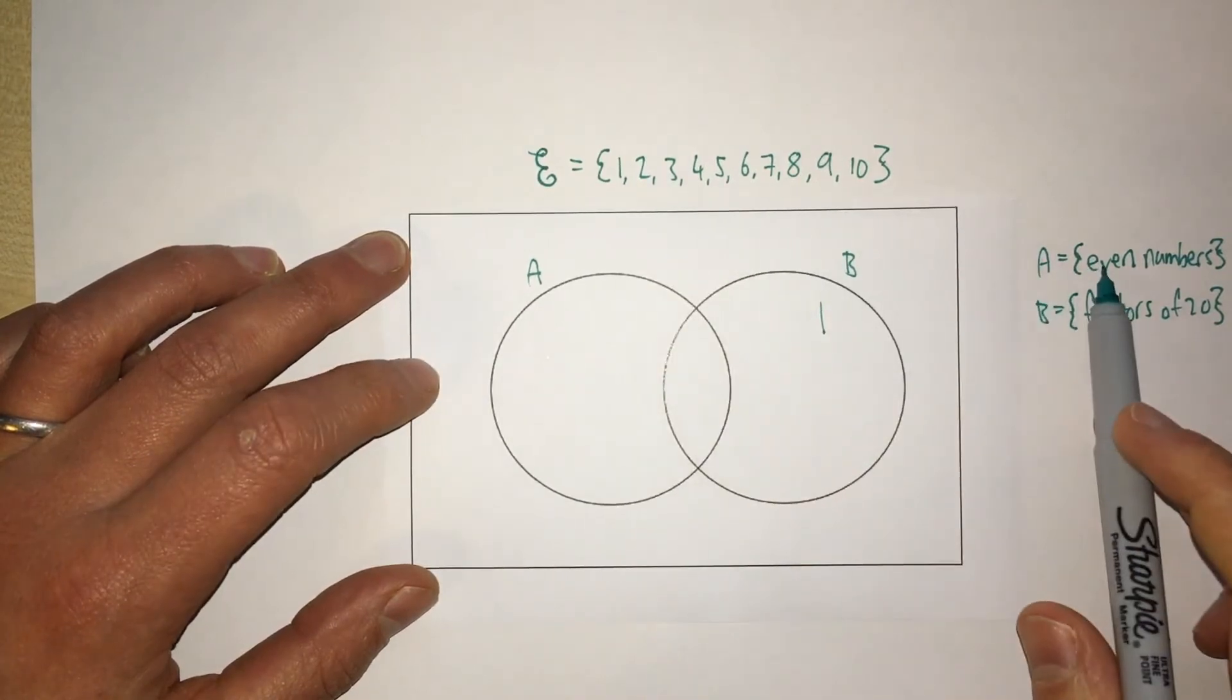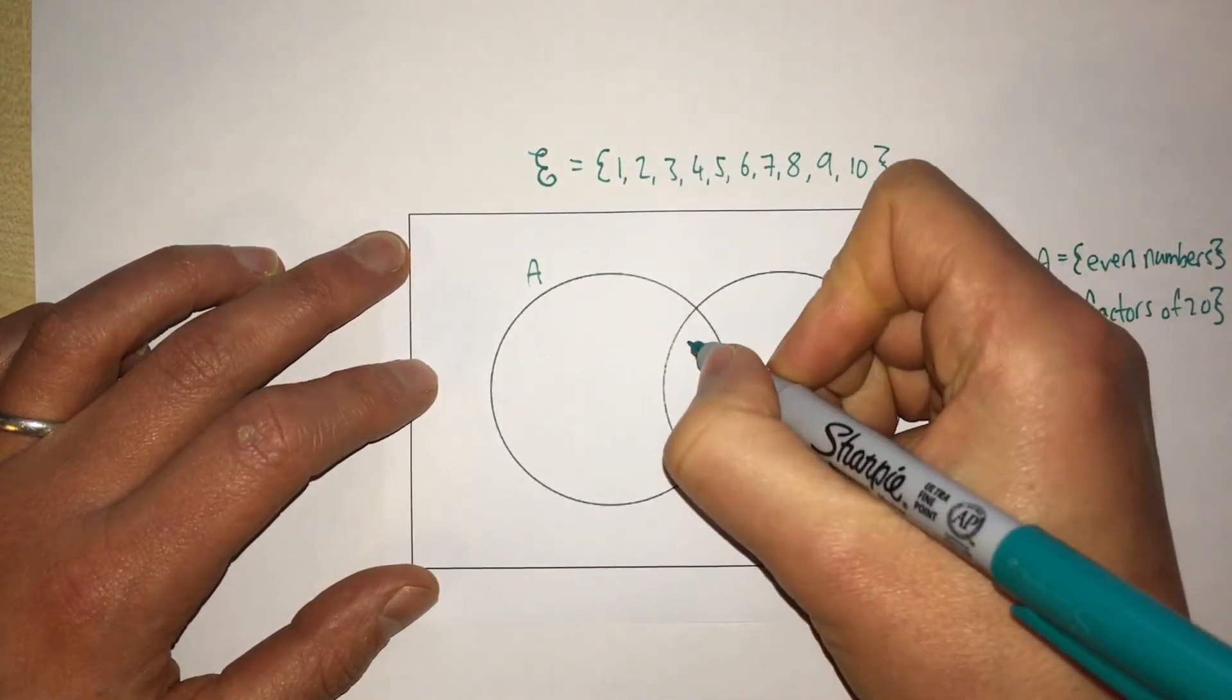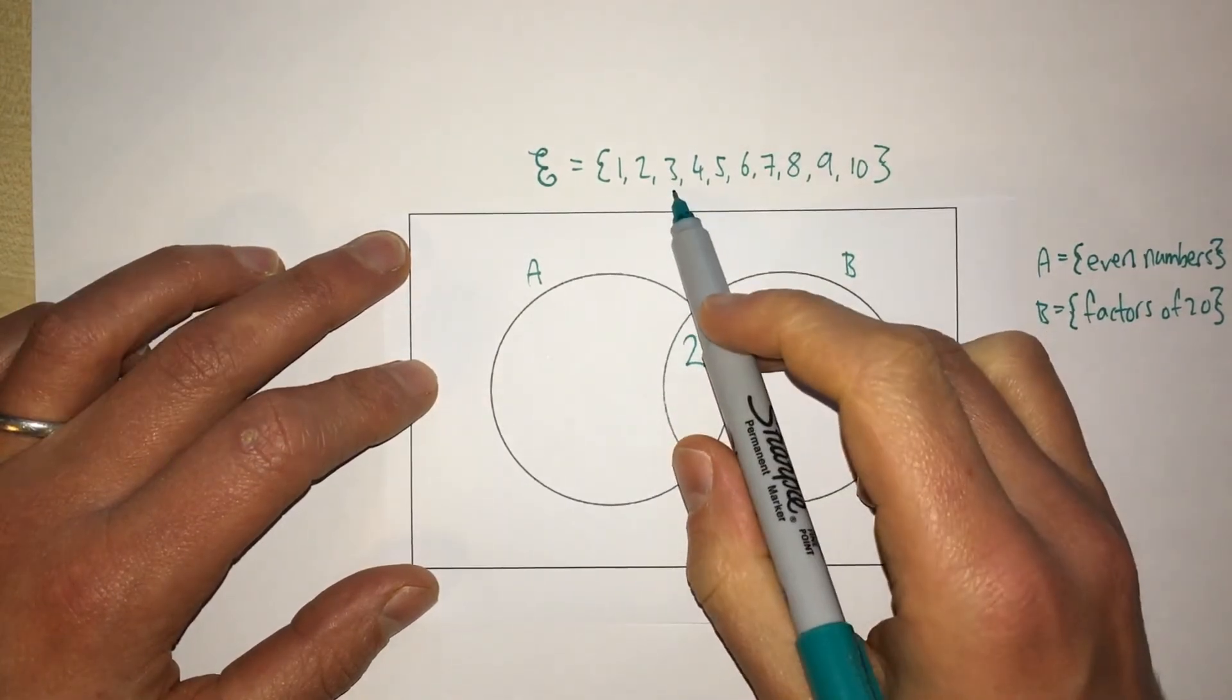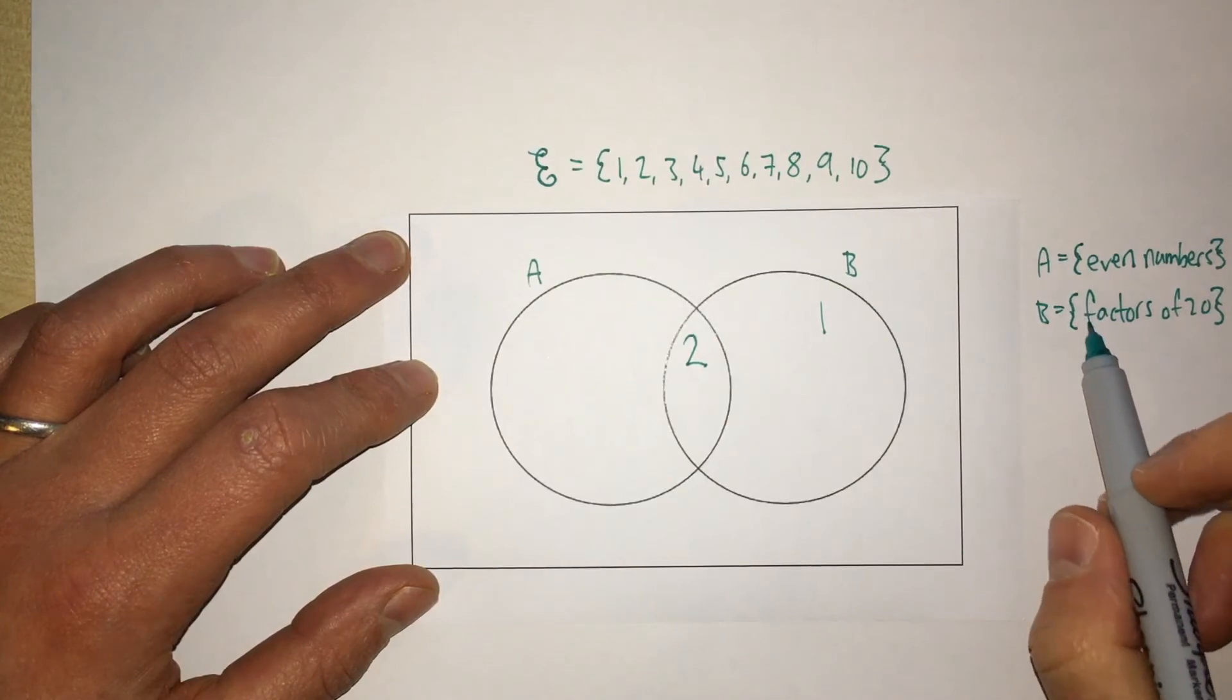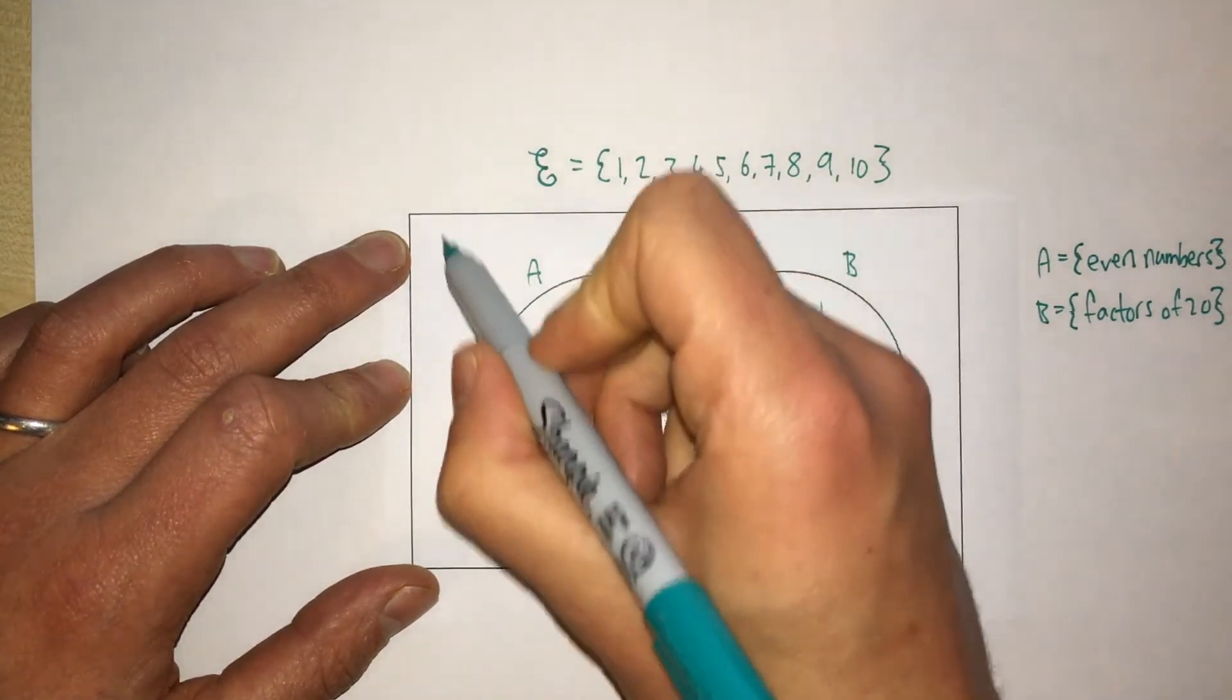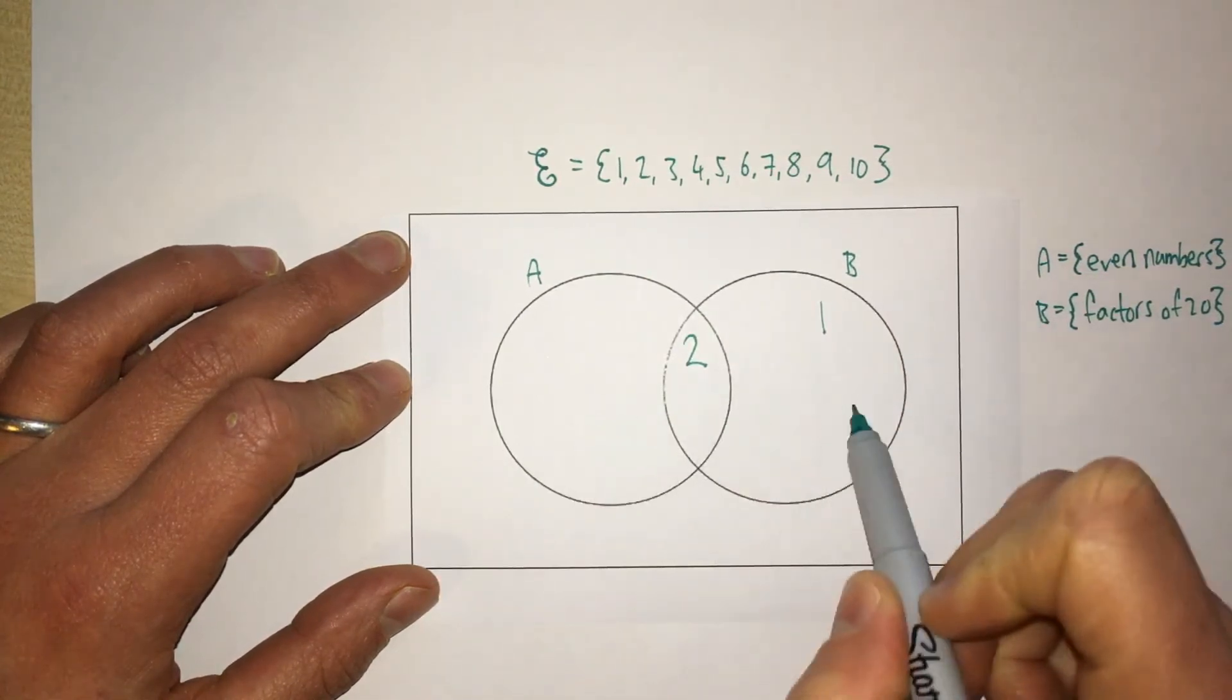Is 2 even? Yes it is. Is it a factor of 20? Yes it is. 3. Is it even? No. Is it a factor of 20? No. So the number 3 goes inside the rectangle, but it doesn't go in either of these sets.